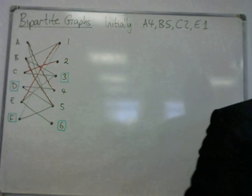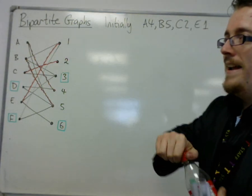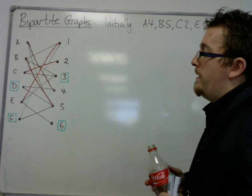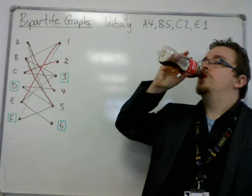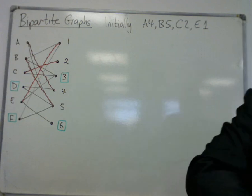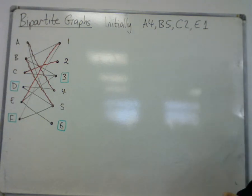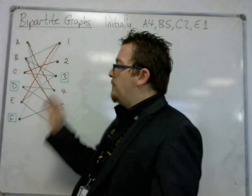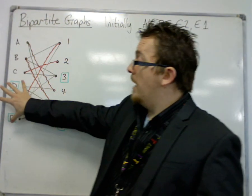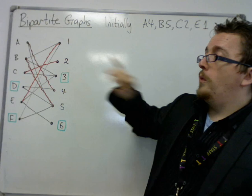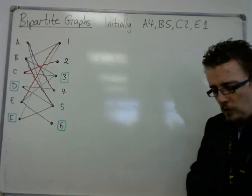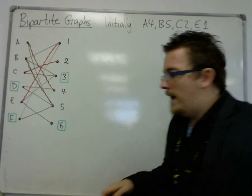We're going to have to try and find a maximal matching if we can. A complete matching would be excellent, but we'll see what we can do. We've got to find an alternating path that gets me from one of the unmatched workers to one of the unmatched tasks. Let's see what happens.